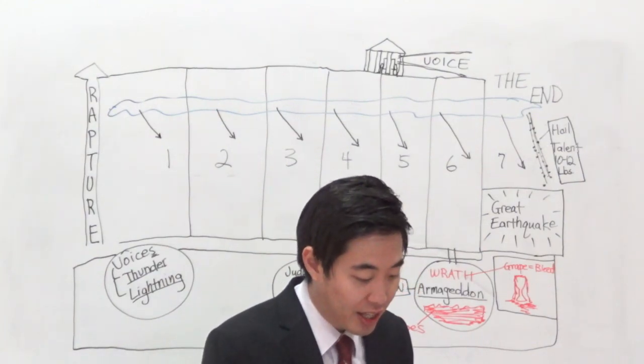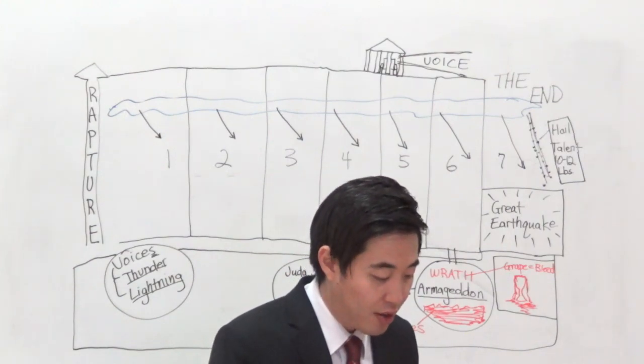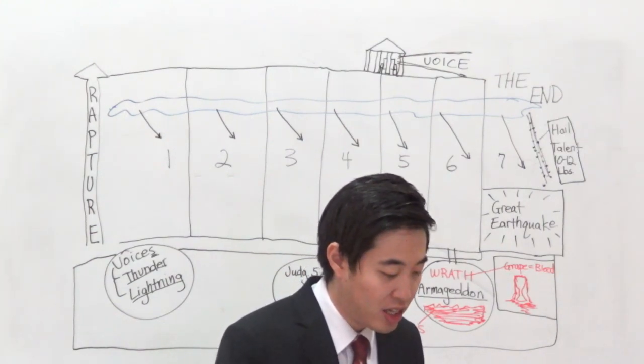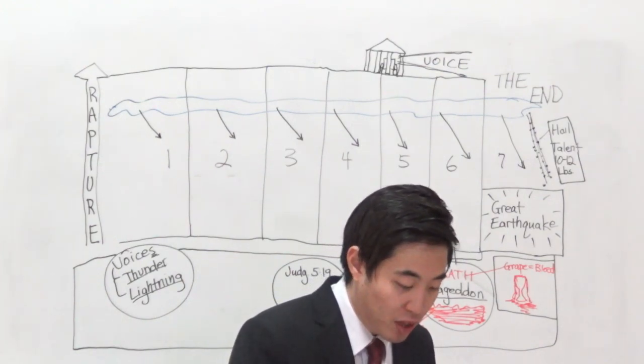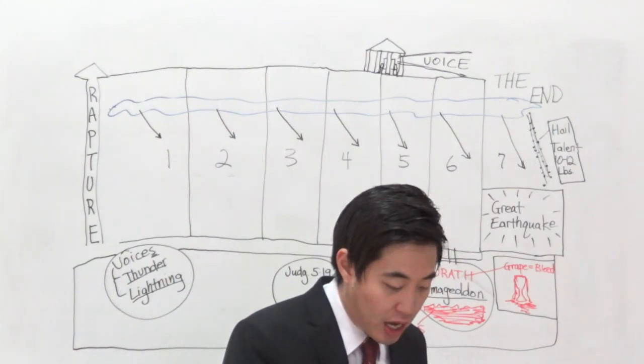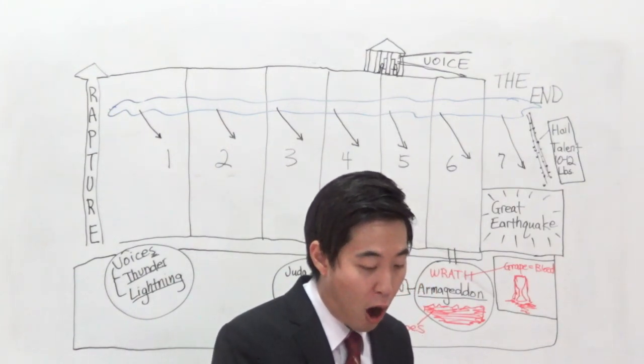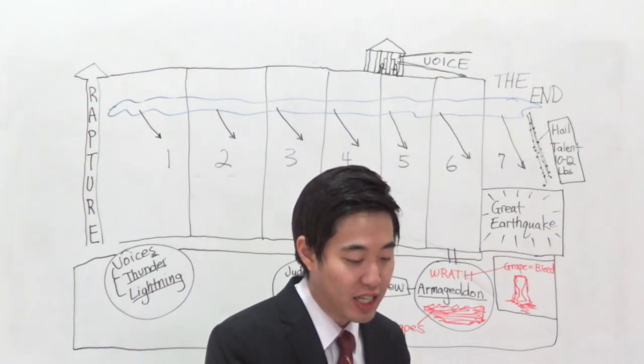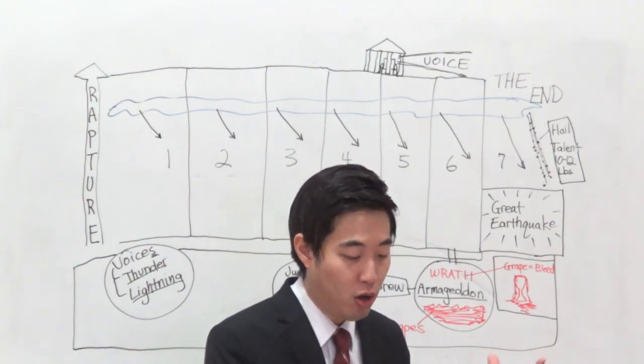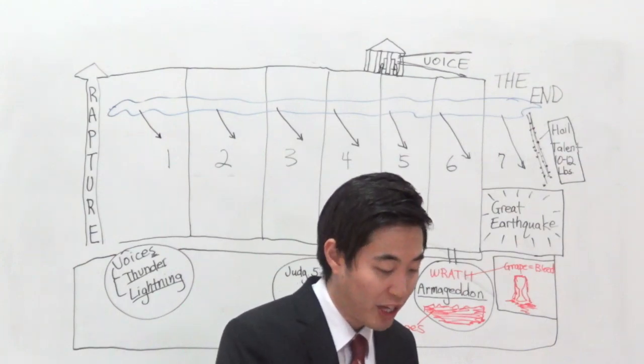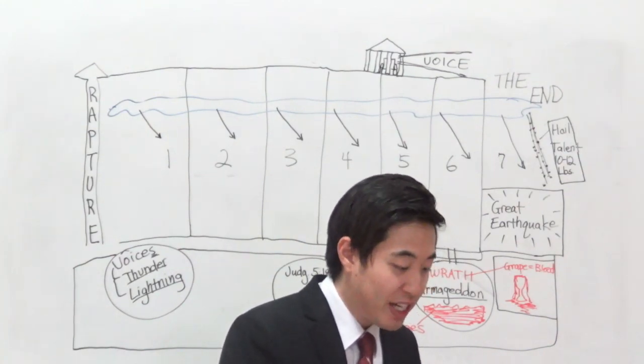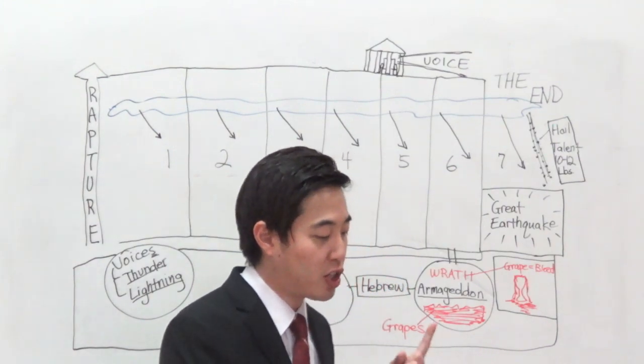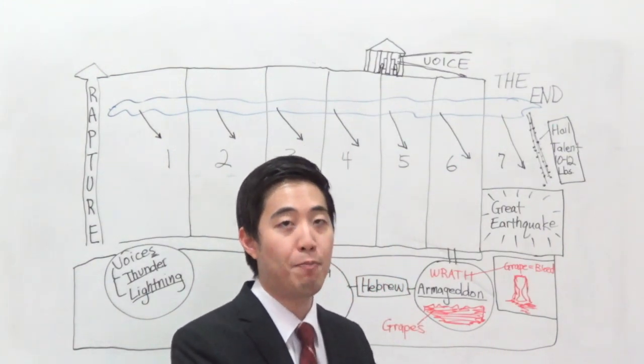Judges 5:19. The kings came and fought, then fought the kings of Canaan in Taanak by the waters of Megiddo. They took no gain of money. Megiddo is another word for Armageddon. And you're going to see the location of Megiddo around the similar region of Armageddon. Basically, they're tied. But what is interesting is that Judges 5 talks about Deborah.